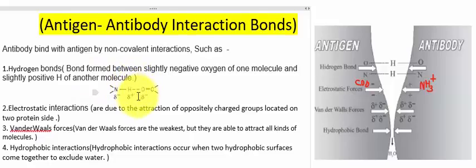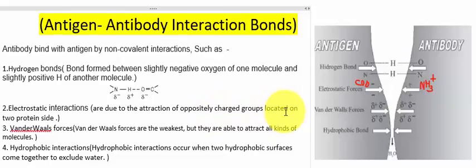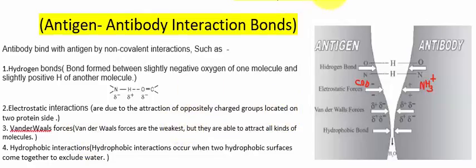So this particular interaction is the hydrogen bond. The next point is electrostatic interactions. Electrostatic interactions generally occur due to the attraction of the oppositely charged groups located on the two protein sides. We all know that antigens and antibodies are kinds of proteins.